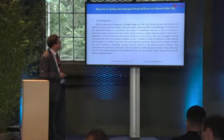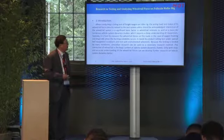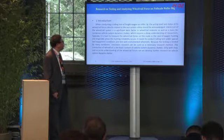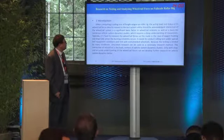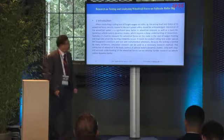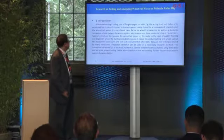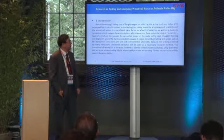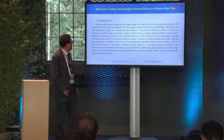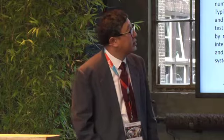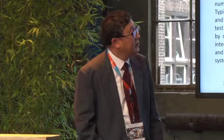Introduction. When conducting a rolling test of a freight wagon on a roller rig, the acting level and status of its wheel rail forces are directly related to the test system safety. Interaction of the wheel-rail system is a significant basic factor in wheel-rail relations, as well as a basis for numerous vehicle system dynamics studies.